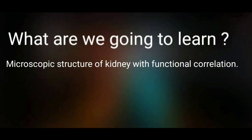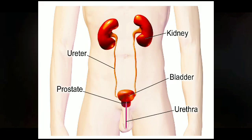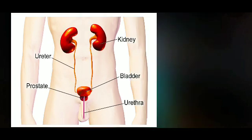Welcome to this short video explaining the microscopic structure of the kidney with functional correlation. The kidneys are a pair of organs located towards the posterior abdominal wall region. The major functions of the kidneys are formation of urine, excretion of metabolites, and the kidneys also have endocrine functions.